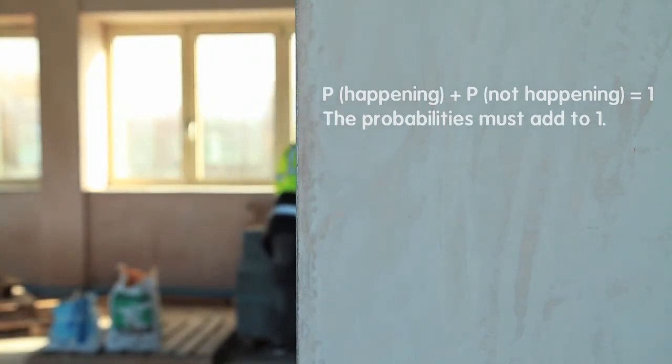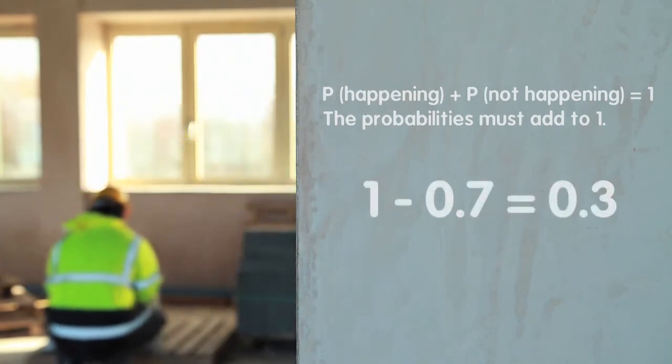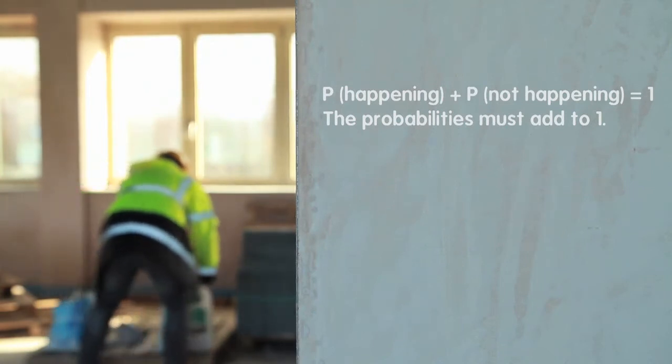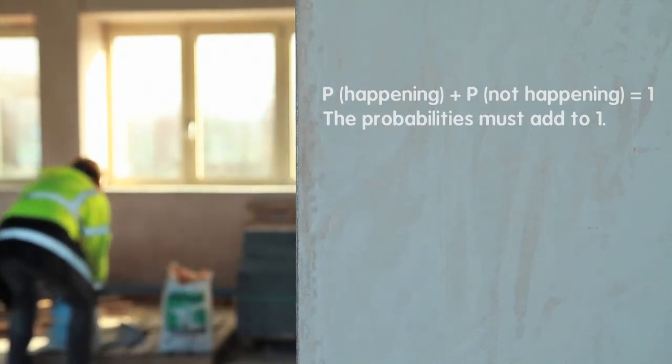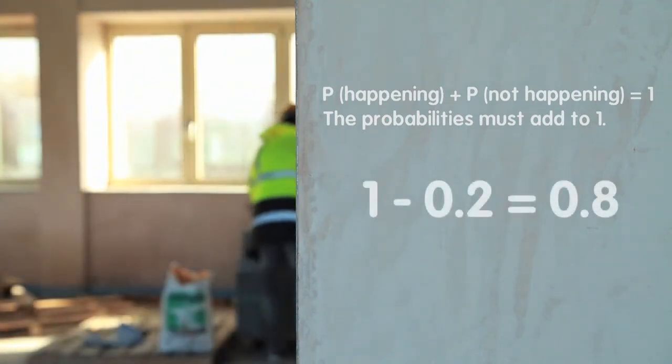Therefore, the probability Ashok will not be working on the building site is 1 minus 0.7, which is equal to 0.3. Also, the probability Ashok will not be working during the weekend is 1 minus 0.2, which is equal to 0.8.